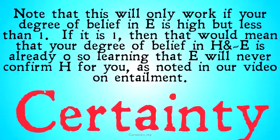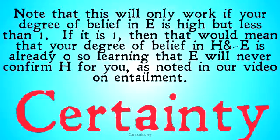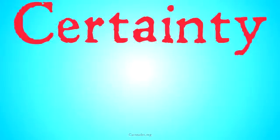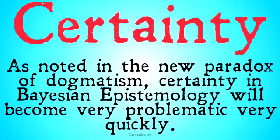Note that this workaround will only work if your degree of belief in E is high but less than 1. If it's 1, that would mean your degree of belief in H-and-not-E is already zero, so learning E will never confirm H — as noted in our video on entailment. The implication workaround won't help either, because there's no 0.02 left to push over and help confirm your hypothesis. As noted in the new paradox of dogmatism, certainty in Bayesian epistemology becomes very problematic very quickly.